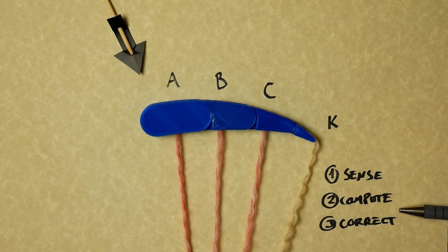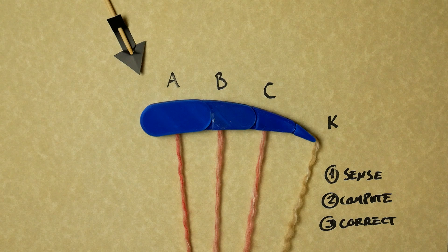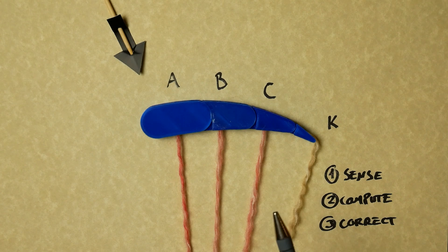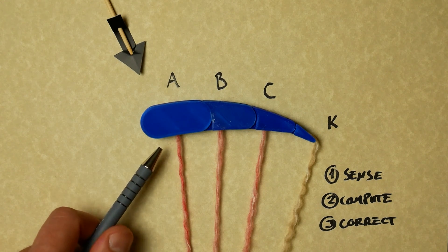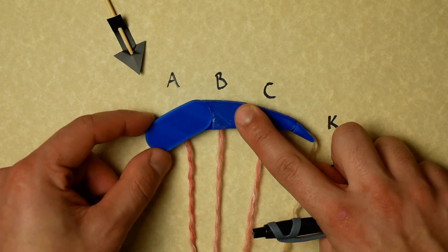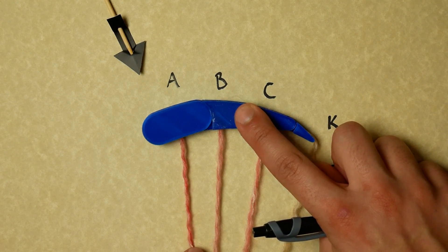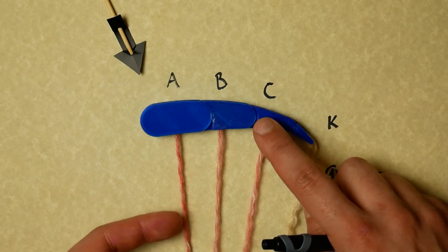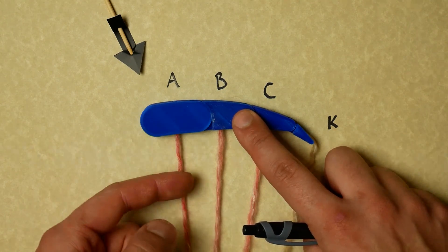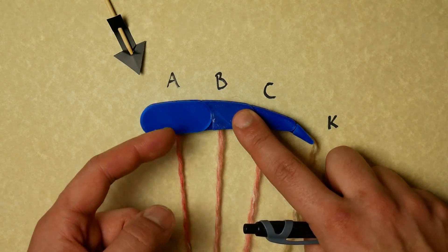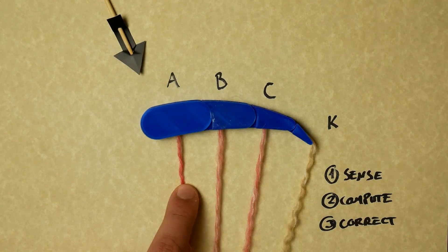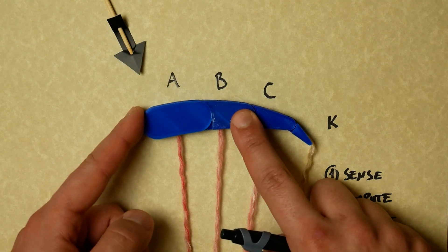So luckily for us, what is very good at sensing, computing, and correcting very fast is a computer. What I'm proposing is that if we could measure the tension on these lines, we could anticipate a collapse before it even happens. Because for that portion of the wing to collapse, this has to have gone to zero. And nothing goes from 20 to zero without going through everything in between. It might be very fast, but the tension on this line definitely has to go 20, 15, 10, 5, 0.